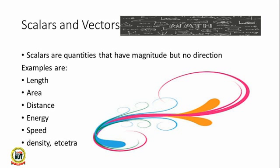When scalars is mentioned to you, what comes to your mind? Already you have learned this in your previous classes in physics, but let's go over it again. Scalars are quantities that have magnitude but no direction. When we say magnitude, we are talking about the size or value of that physical quantity. For example, we measure rice in moodles, so a moodle of rice is the value attached to that rice. If it costs a thousand naira, we say the magnitude of that rice is a thousand naira.